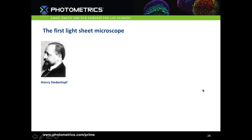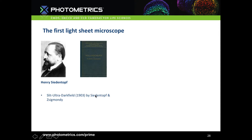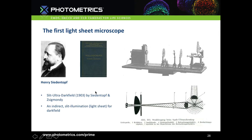Lightsheet feels like a new technique, but it was actually invented back in 1903 by Ziedentopf and Zsigmondy, who published what we would now call an ultramicroscope. It's an indirect slit illumination used for darkfield, but it uses exactly the same principle — light comes in from the left, passes through lenses, hits the illumination objective casting the lightsheet onto the sample, and is detected through the detection objective. The beam converges at the centre and diverges out again to form the lightsheet.